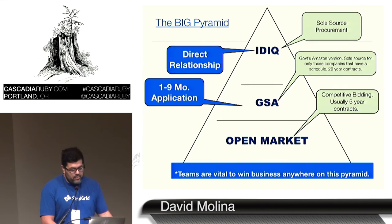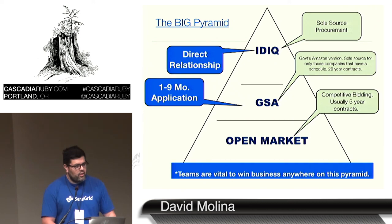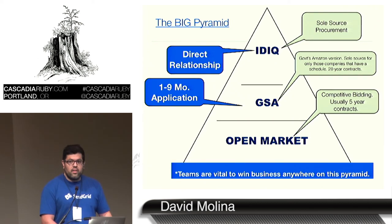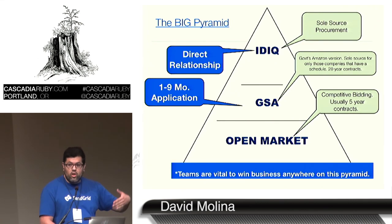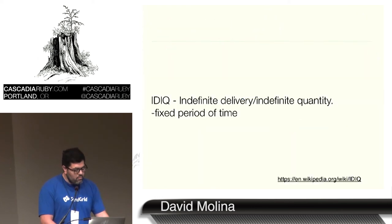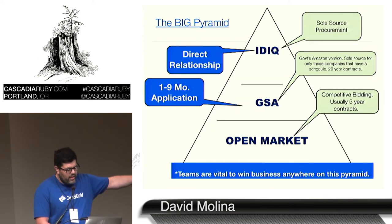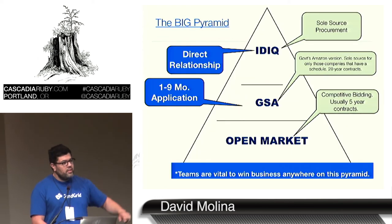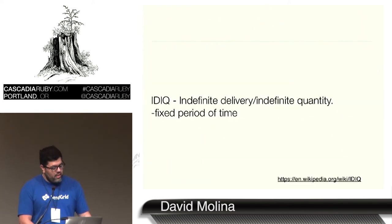Then there's the open bidding market — the very bottom open market. This is competitive bidding. These are usually five-year contracts. You don't necessarily have a lot of experience, but you have to have experience at least in the private sector — that's called past performance. You go and you bid. But the key is teams. Teams are vital.